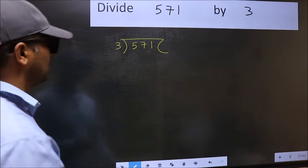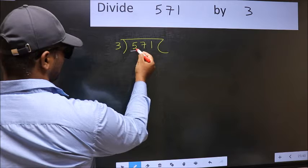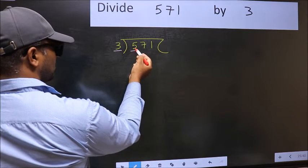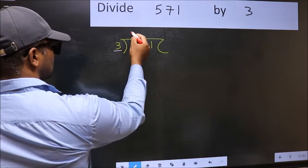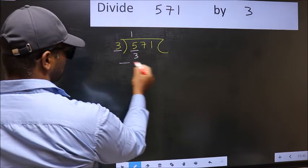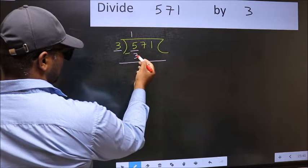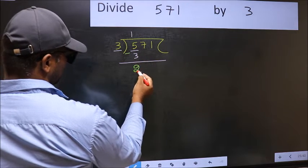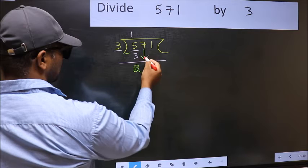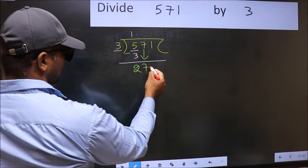Next, here we have 5 and here 3. A number close to 5 in 3 table is 3 once 3. Now you should subtract 5 minus 3, 2. After this, bring down the beside number. So 7 down.